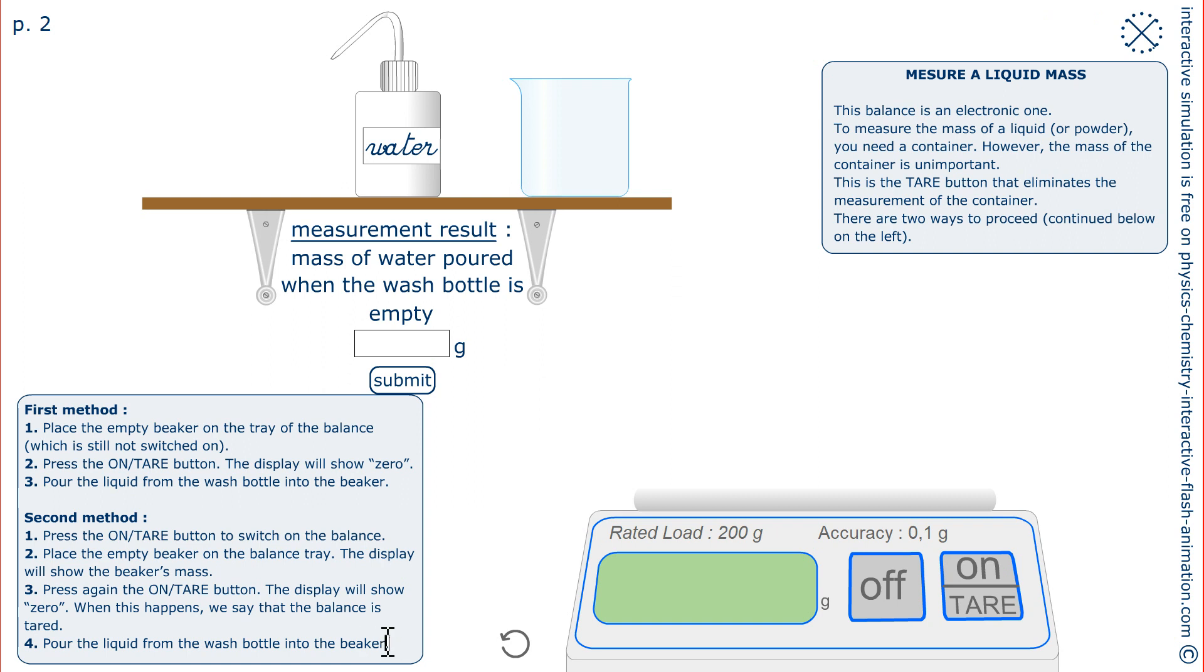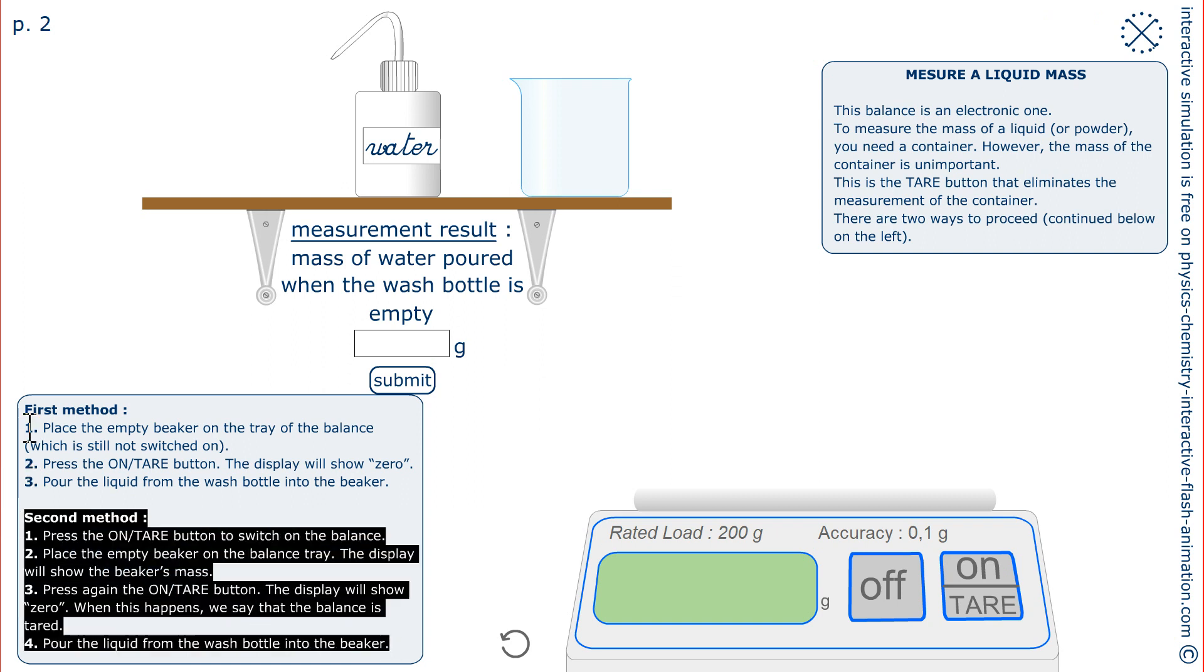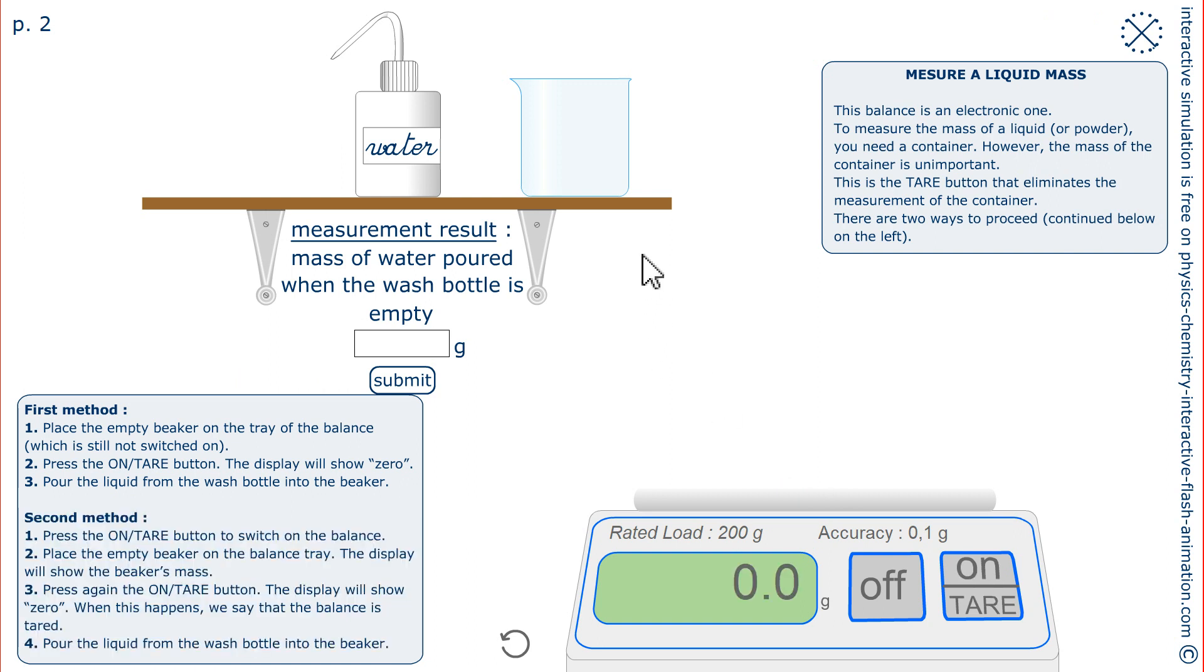There is a second technique, which consists of turning on the scale, then putting the container down. The mass of the container is read. Because it is useless, we must press TAR so that the screen displays zero.